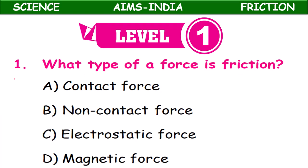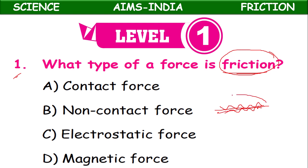Level 1, first question: What type of force is friction? Friction always occurs between two surfaces due to irregularities between them. The two surfaces must be in contact for frictional force to occur, so it's a kind of contact force.